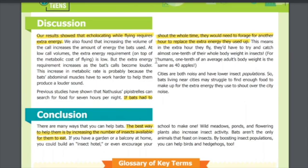For humans, one-tenth of an average adult's body weight is the same as 40 apples. Cities are both noisy and have lower insect populations, so bats living near cities may struggle to find enough food to make up for the extra energy they use to shout over the city noise.